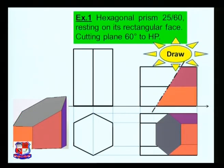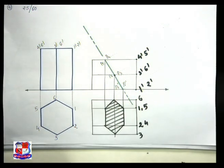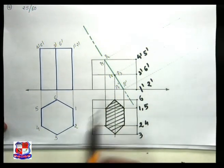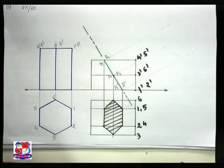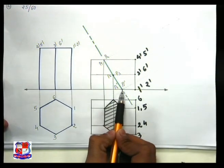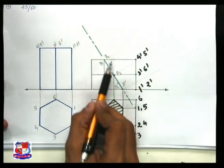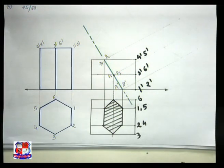In this problem we will draw the true shape. This shows the sectional top view and this shows the front view. To draw the true shape of this section, first find out the position of each respective point from the XY line. Points P1, P2, P3, P4, P5, and P6 are located. Locate all these points in the top view as well.